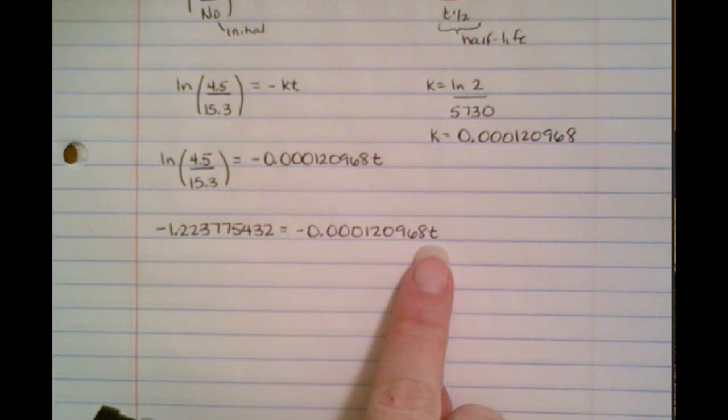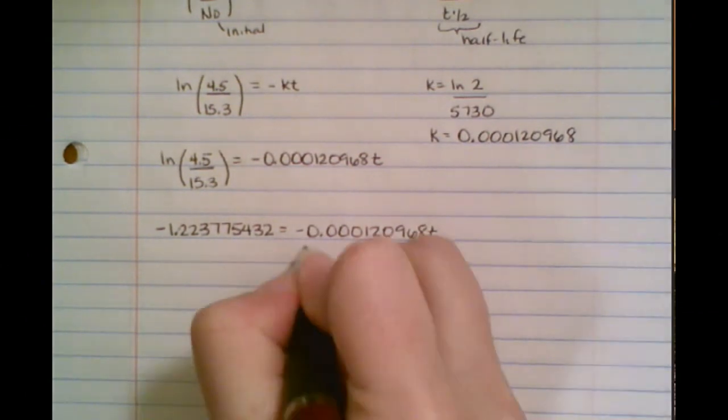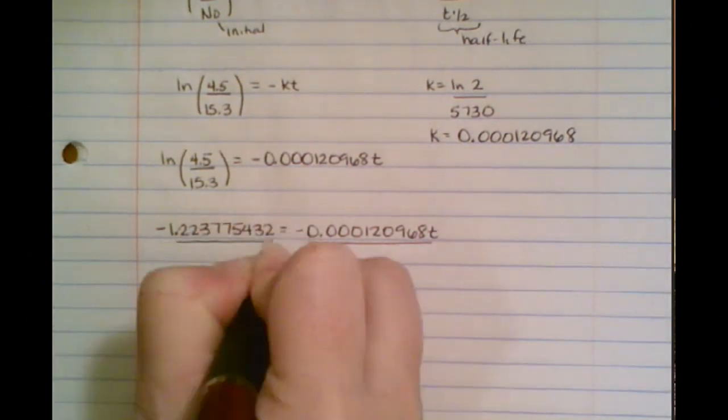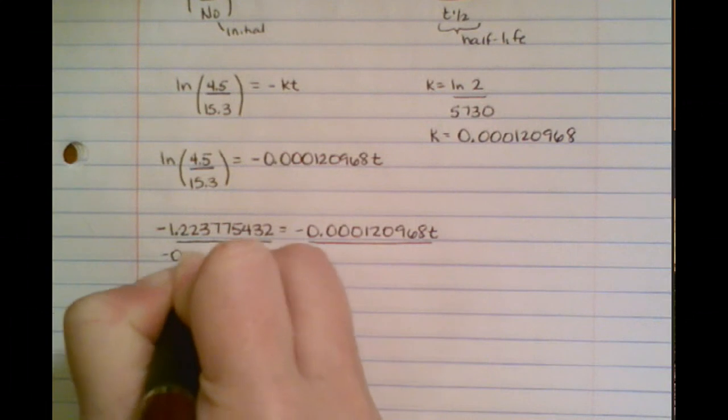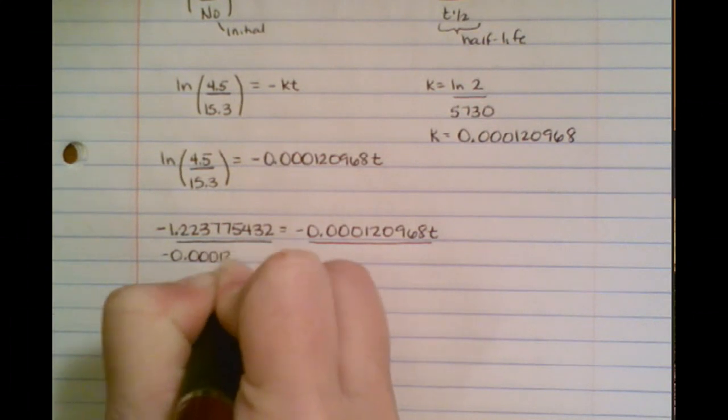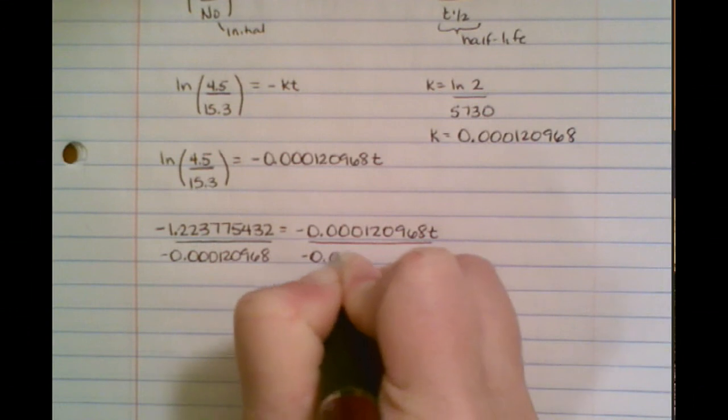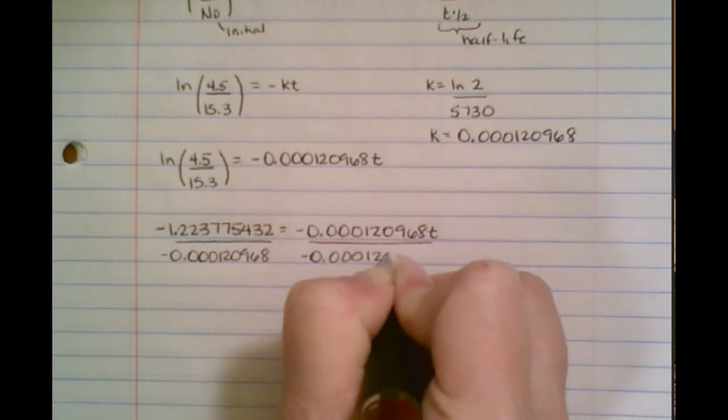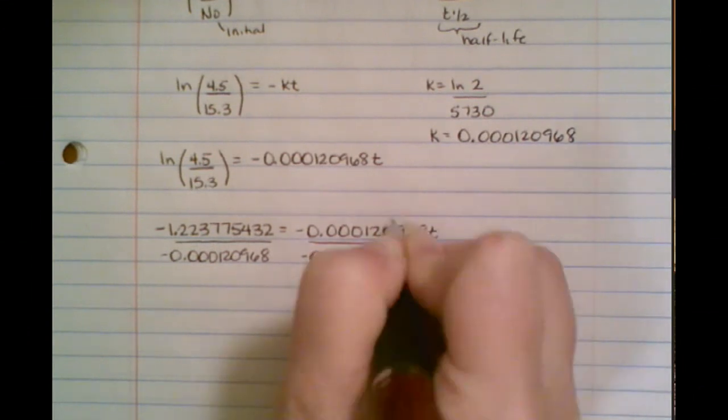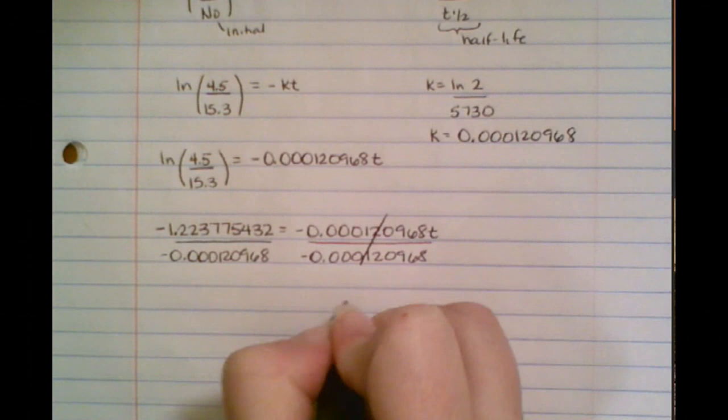Now I want to get t all by itself, so the opposite of multiplication is division. I'm going to divide both sides by everything that I see in front of that t. We know when we do that, anything over itself is just 1, so those will cancel, and that will leave me with t.